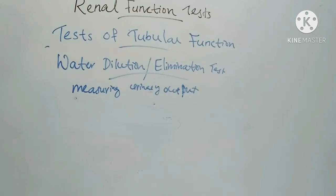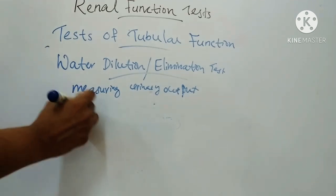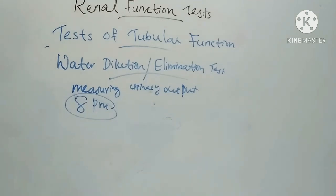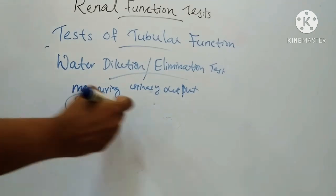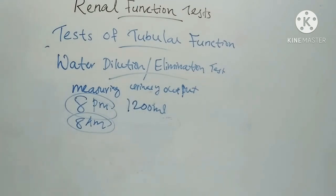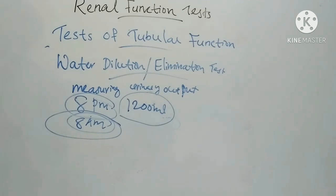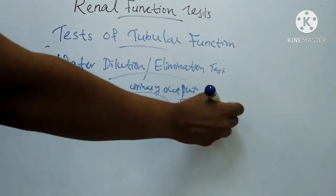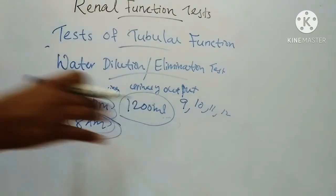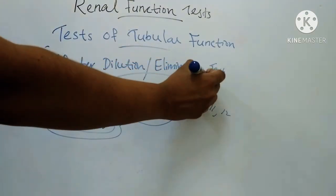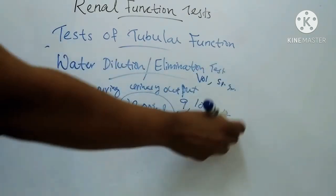On the day before the test, the patient takes the evening meal before 8 pm. On the morning of the test, the patient empties the bladder at 8 am and this urine is discarded. Then the patient drinks 1200 ml of water within half an hour. The bladder is emptied at 9 am, 10 am, 11 am, and 12 pm, and the volume and specific gravity of all four specimens are measured.